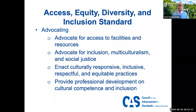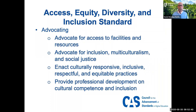There's also a section on advocating. CAS says that programs and services must advocate for access to facilities and resources, advocating for inclusion, both for multiculturalism and social justice, enacting culturally responsive, inclusive, respectful, equitable practices, and making sure that the staff in that area are also developing cultural competence.